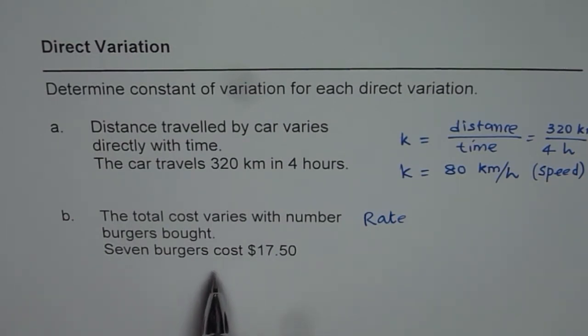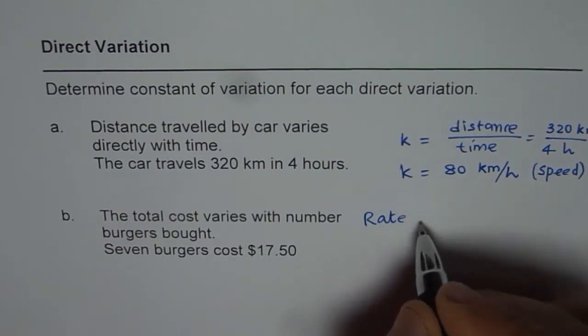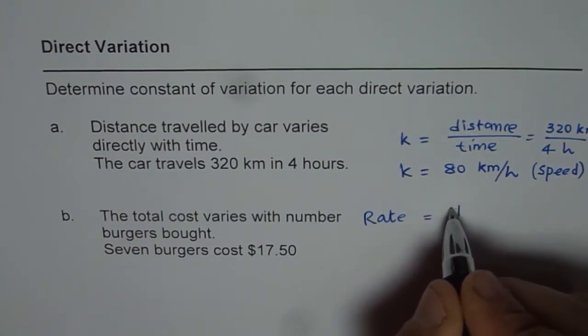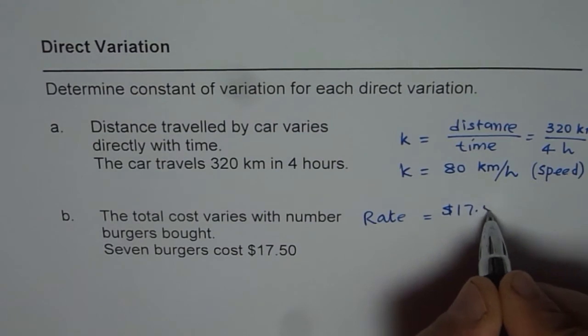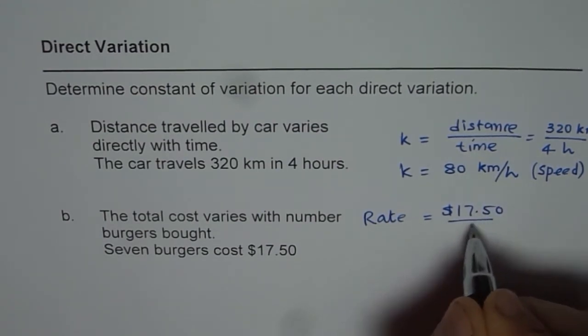So, the rate is for the number of burgers, 7 burgers cost $17.50. How much will one burger cost? That is the rate constant. So, one will cost $17.50 divided by 7.